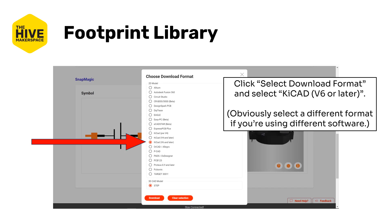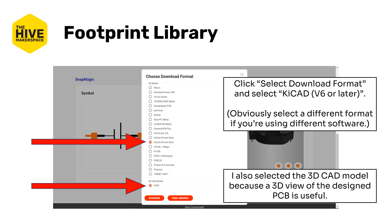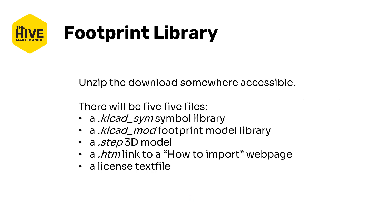Click on the Select Download Format button under the SnapMagic models, and then select KiCad version 6 or later. Obviously, if you're using different software, select the appropriate format. I also selected the 3D CAD model because a 3D view of the PCB design is a nice thing to have. It'll download a zip file — unzip that. There should be five files: a symbol library, a footprint model library, a STEP file for the 3D model, a link to a how-to import web page, and a license text file.